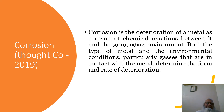This definition is taken from Thought Co 2019: corrosion is the deterioration of a metal as a result of chemical reactions between it and the surrounding environment. Both the type of metal and the environmental condition, particularly gases that are in contact with the metal, determine the form and rate of deterioration.